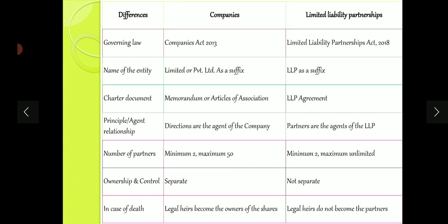Now let's look at the differences between company and LLP. Number one: governing law — a company is governed by the Companies Act 2013, whereas LLP is governed by the LLP Act 2008. Regarding name of the entity, companies generally have 'private limited' or 'limited' at the end, but LLPs have 'limited liability partnership' at the end. The chartered document — the document describing how the business operates — is called the memorandum or articles of association for companies, but in case of LLP it is called the LLP agreement.